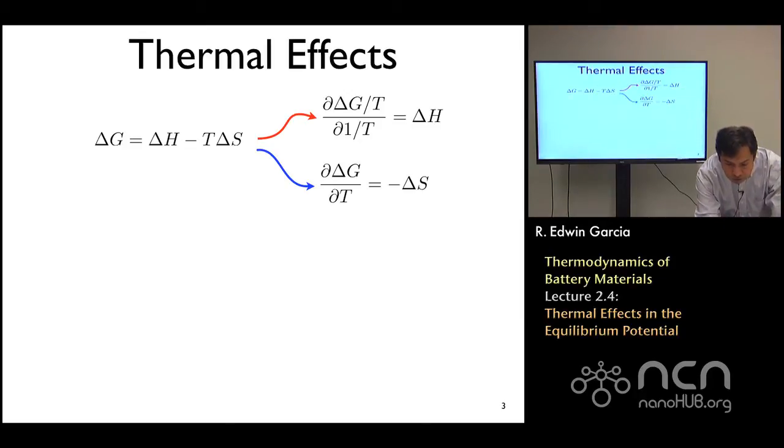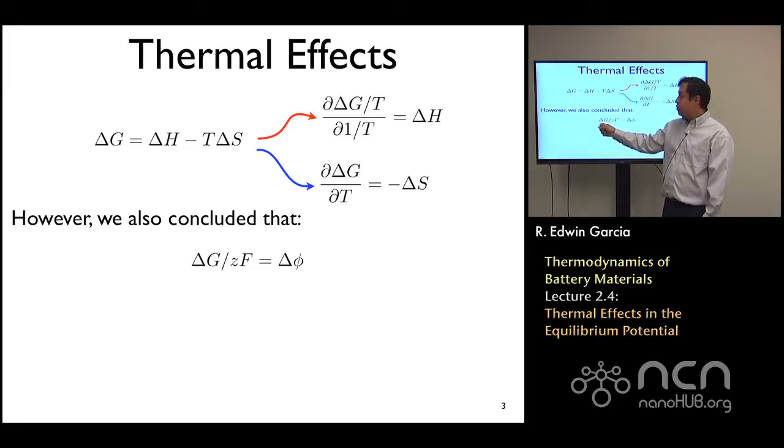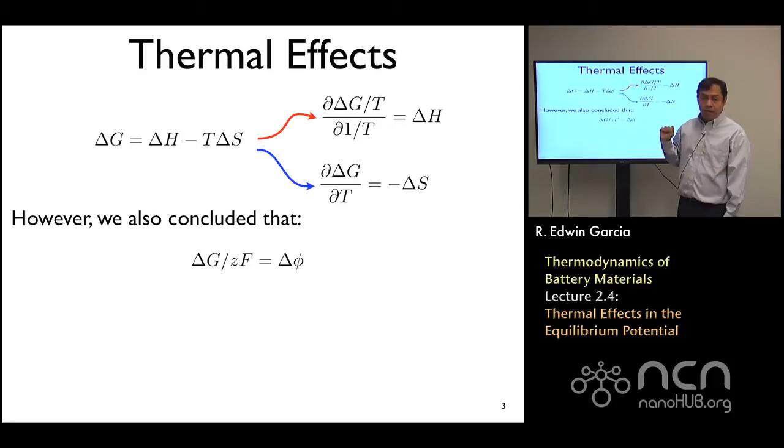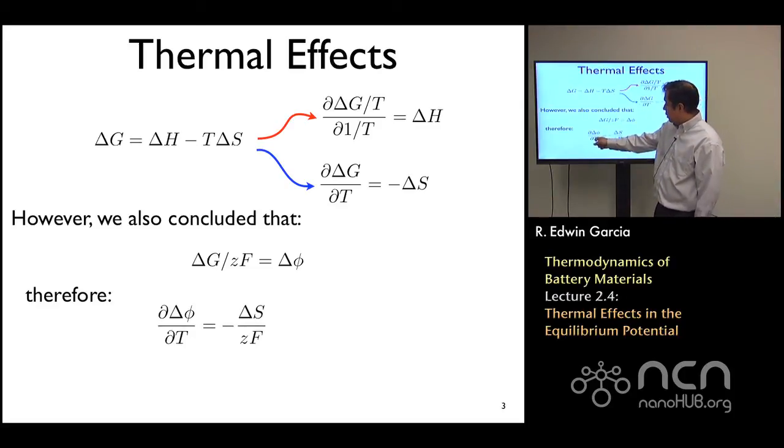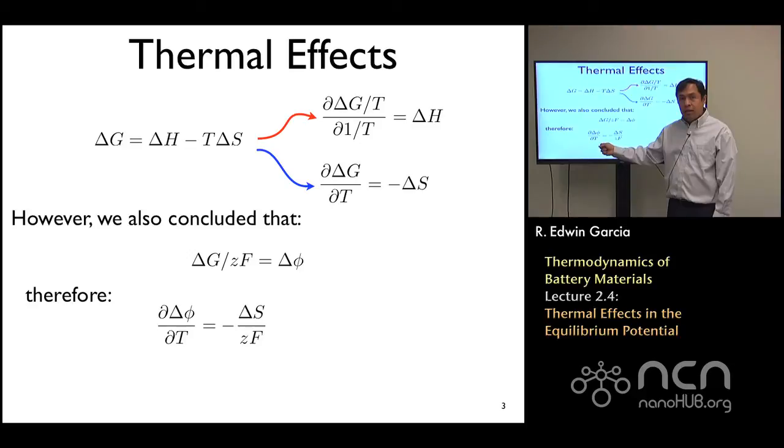From previous lectures, we have concluded that the voltage really corresponds to that Gibbs free energy of the transformation divided by zF. So if we agree with that, then we can readily identify by dividing this whole expression by zF that the temperature dependence of the voltage with respect to temperature—the derivative of the voltage with respect to temperature—really corresponds to the entropic term divided by zF. And if ΔS is positive, then what this term is telling us is that if the temperature increases on a battery, the voltage is going to drop.